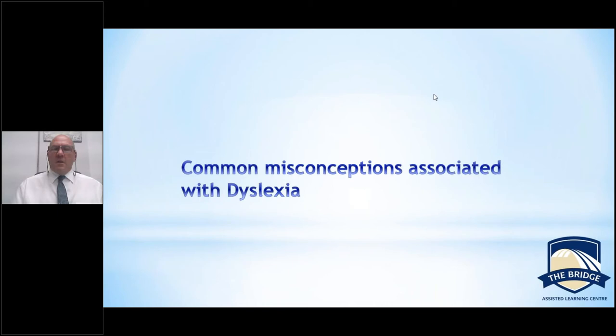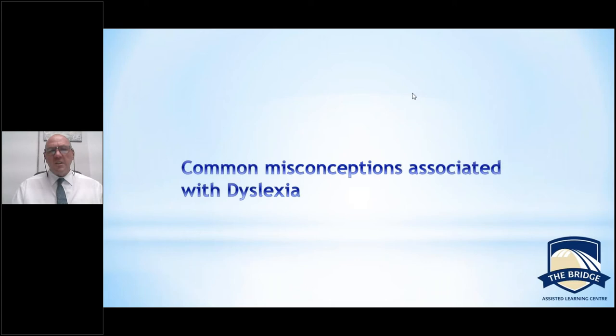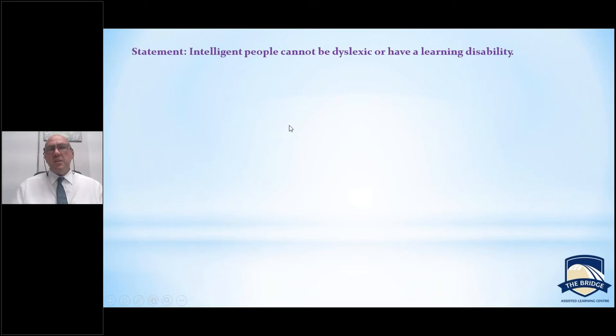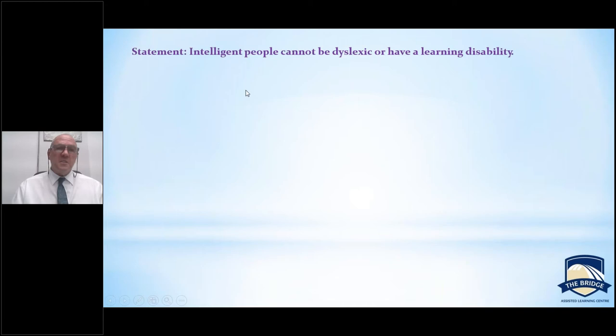Very well said in terms of defining what we're trying to work on and the interventions we need to make. Now let's look at misconceptions, because people over the years have really had their own ideas about what dyslexia is and isn't. The first one: intelligent people cannot be dyslexic or have a learning disability. Some of these were already answered in the two videos, but dyslexia and intelligence are not connected — many dyslexic individuals are very creative and have accomplished incredible things as adults.